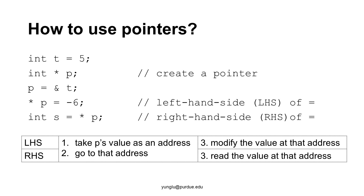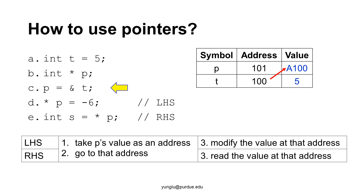Let's trace the code and understand how things work. Suppose the program reaches line C. This line assigns t's address to p's value, so p's value is 100. Consider the program reaches line D. This line has three steps. The first step takes p's value, which is 100. The second step goes to address 100. The third step modifies the value at address 100 to -6. As a result, the value of t becomes -6.